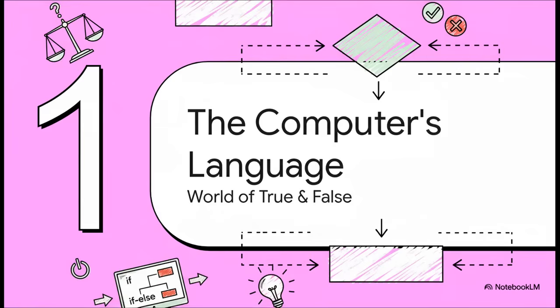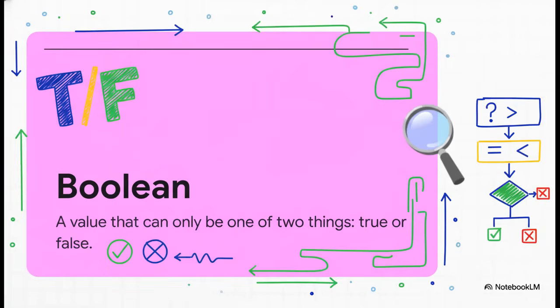All right, let's start at the very beginning. At its core, a computer's world is just incredibly simple. It doesn't get maybe, it doesn't do kinda. For a computer, every single question you can possibly ask it boils down to one of two answers, and only two: true or false. And this whole black and white concept, it's got a special name, a boolean.